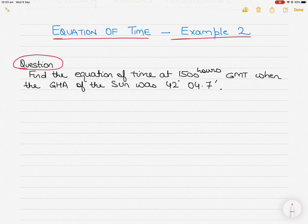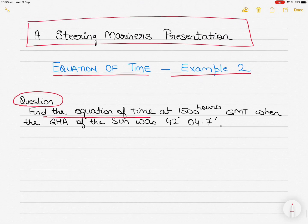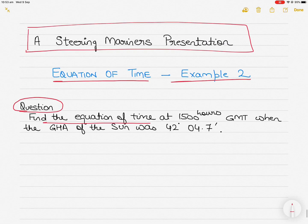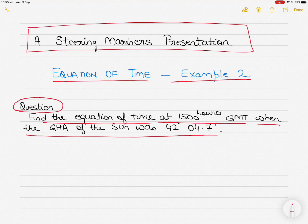In today's question, you have to find the equation of time at about 1500 hours GMT when the GHA of the sun was 42 degrees 4.7 minutes.